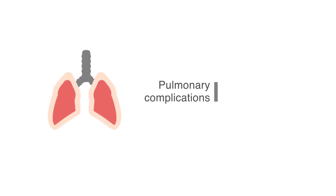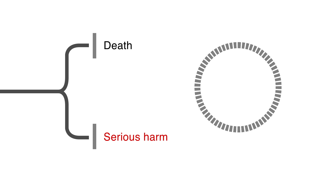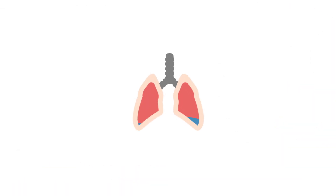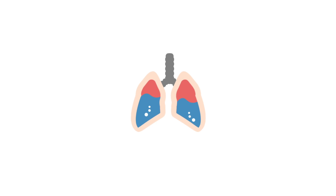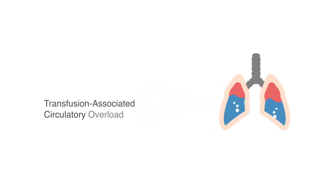Pulmonary complications are the most common cause of death and serious harm from transfusion. The patient develops difficulty breathing, usually within six hours of transfusion, with evidence of pulmonary edema. These findings are most commonly due to a build-up of excess fluid in the circulation, with leakage into the lungs by hydrostatic pressure. We call this transfusion-associated circulatory overload, abbreviated to TACO.